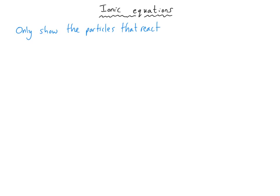The sulfate ion doesn't actually take part in the reaction — it's there at the beginning and at the end, so it doesn't really react. We'll now look at ionic equations, which only show the particles involved in the actual reaction. The particles that aren't involved — that aren't reduced or oxidized — are left out. We call them spectator ions, because they just sit there and don't do anything, watching the rest of the reaction happen.